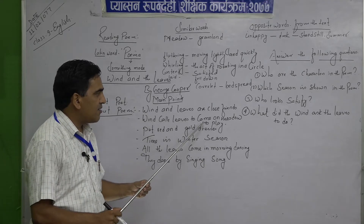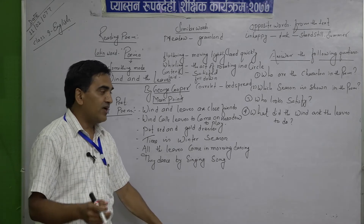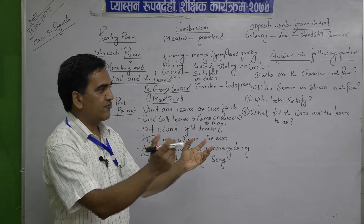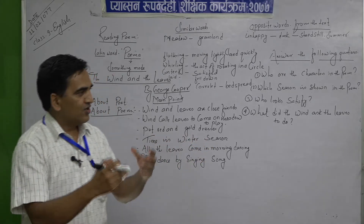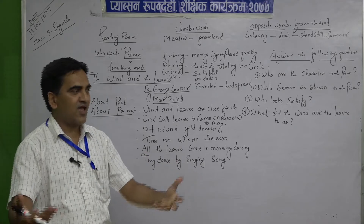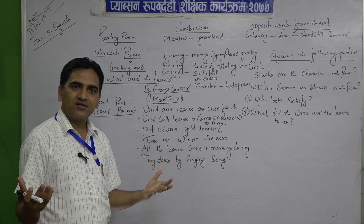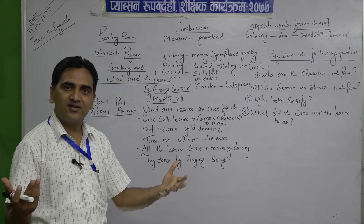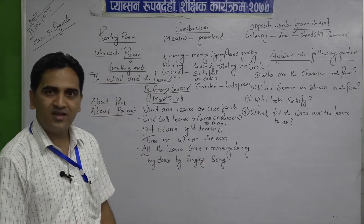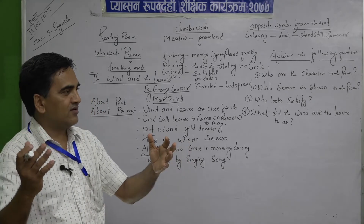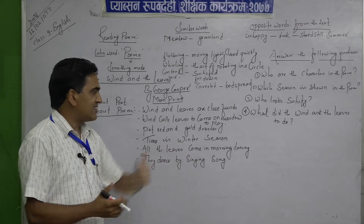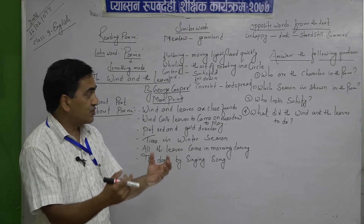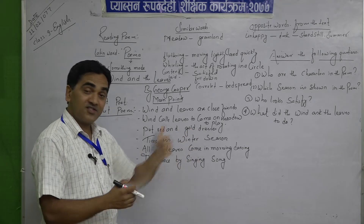Wind calls the leaves to come on the meadow to play. Wind blows here and there on the meadow. Both are happy. Wind tells the leaves to put on red and gold dresses and come on the meadow to play. They are talking like human beings — like friends.